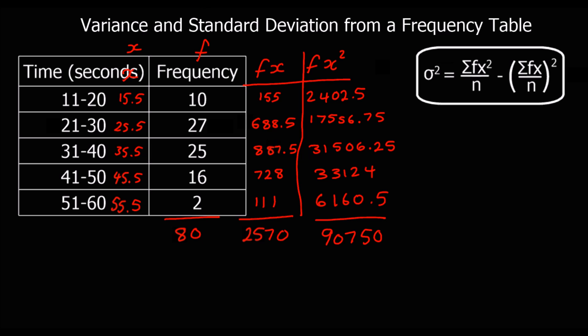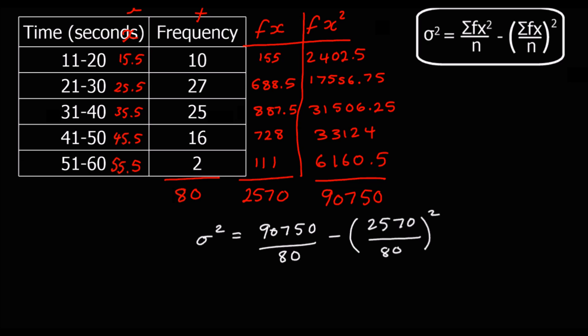So now we're just going to type these numbers into the equation. So the variance is going to be sum of fx squared, which is 90750, over n, 80, minus sum of fx, 2570, over n squared. And we just type that into the calculator, and it will give us our variance. So we've got 102.4 to one decimal place.